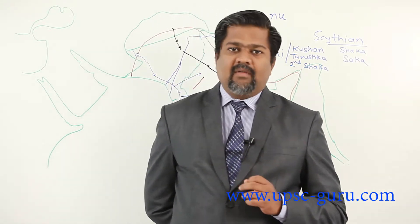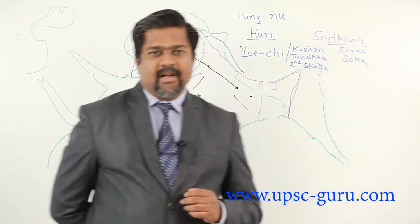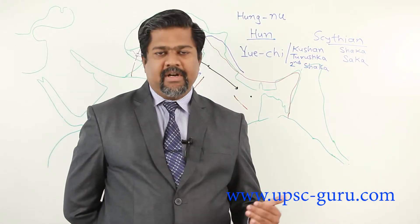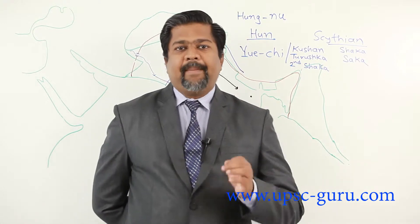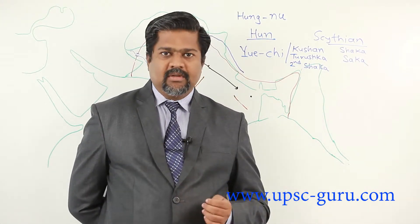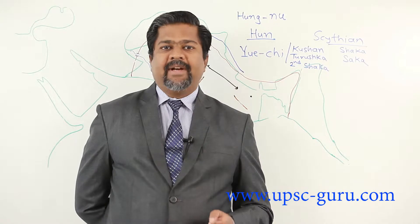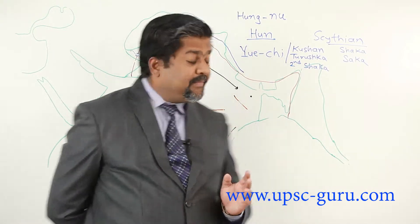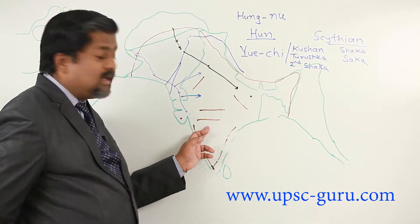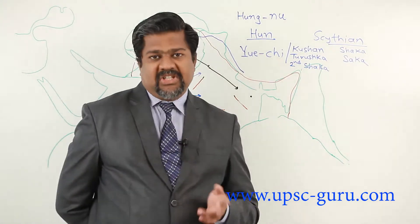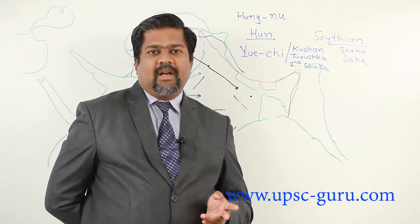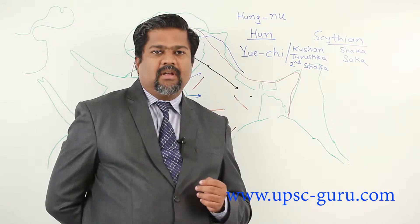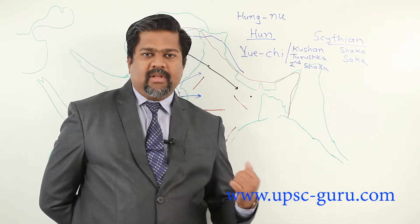This way, the Satavahana dynasty was formed in Maharashtra territory of India. They had their capital at Pratishthana, which is modern day Paitan in Aurangabad district of Maharashtra. He was ruling from this part.